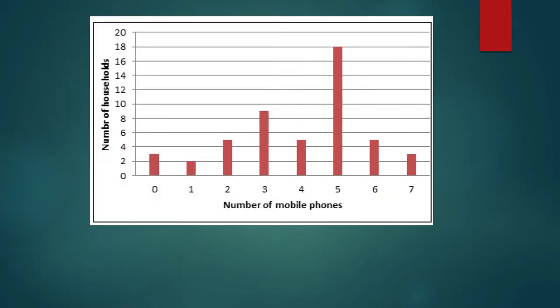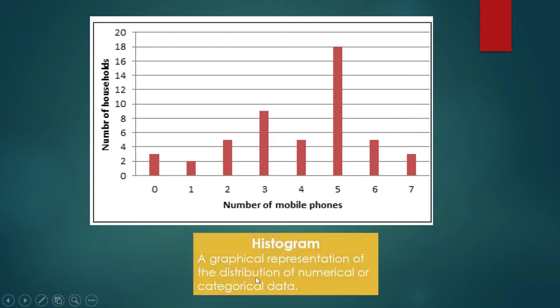You cannot stop with frequency distribution table. You must augment it with a histogram. So a histogram is a graphical representation of the distribution of numerical or categorical data. So this one gives you a visual idea about the pattern of mobile phone ownership. And what's good about this is you see it at once right away. Not like with the tabular representation of information. You have to read it line by line in order that you can see the pattern of mobile phone ownership.